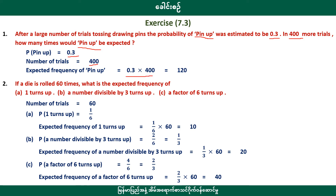After a large number of trials, the probability of a child catching measles is 0.3. Using this, we can find the expected frequency. The expected frequency is 0.3 multiplied by the number of children, giving us the expected number.